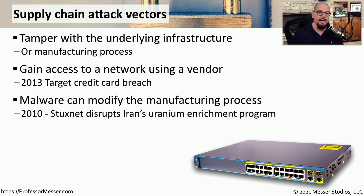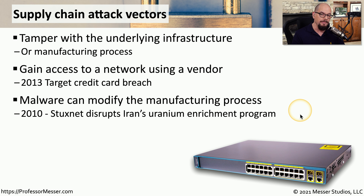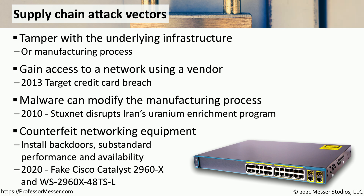A good example of using the supply chain to disrupt the manufacturing process was in 2010 with the Stuxnet worm. This was a partnership between the United States and Israel that put a worm into Iran's uranium enrichment program and disrupted the centrifuges used during that manufacturing. And in 2020, network administrators started to notice that their Cisco switches weren't exactly what they were expecting — there were at least two models of Cisco switches that did not originate at Cisco. The details of where these switches came from is still a mystery, but it speaks to how important it is to be very secure with your supply chain.